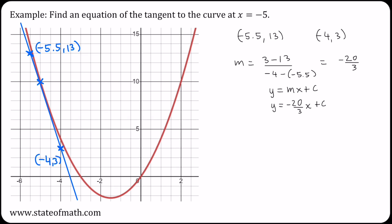I will use the fact that when x is negative 4, y is 3, which means that 3 is minus 20 over 3 times negative 4 plus c. So 3 is 80 over 3 plus c, which makes c be minus 71 over 3.